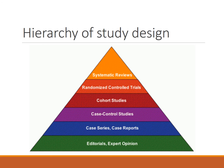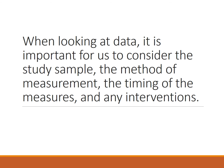This hierarchy of study design shows many different study designs. Those at the top — especially randomized controlled trials — are considered the strongest, and these are the experimental designs. Below that are the more descriptive and observational study designs. Research often starts at the bottom with expert opinions or editorials and moves upward through stronger and stronger study designs. When looking at data, it's important to consider the study sample, the method of measures, the timing of the measures, as well as any interventions.